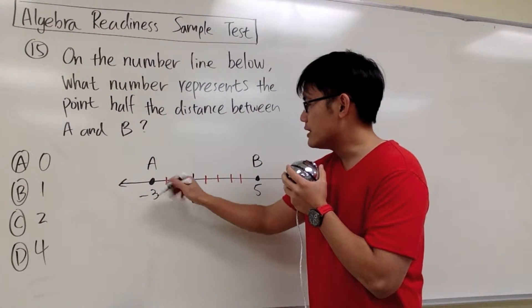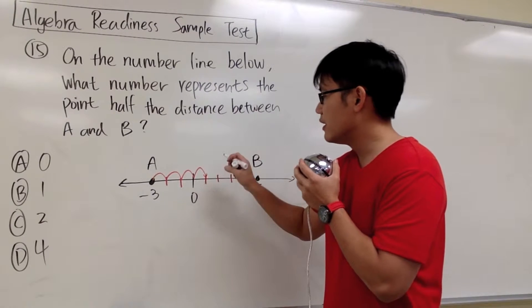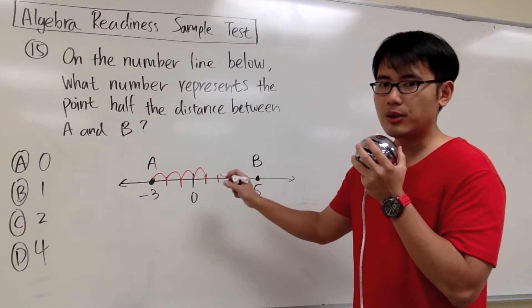if we start with A and we move once, twice, three times, four times, this right here has to be in the middle.